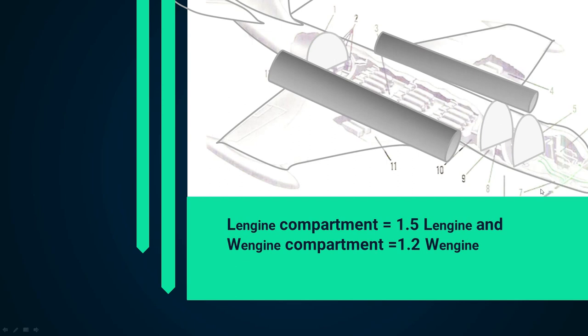The length of the fighter aircraft is determined based on engine selection and the weapons bay. This includes the equipment compartment and a rotary-type bomber carriage door. Based on the number of missiles, the size of each missile, and their alignment on the fuselage, the length of the fuselage will be determined.